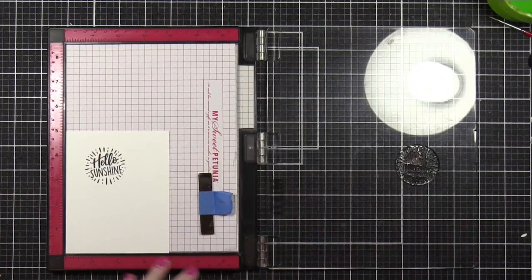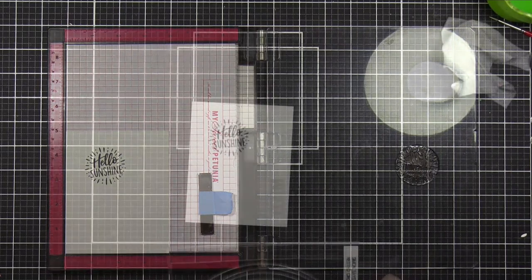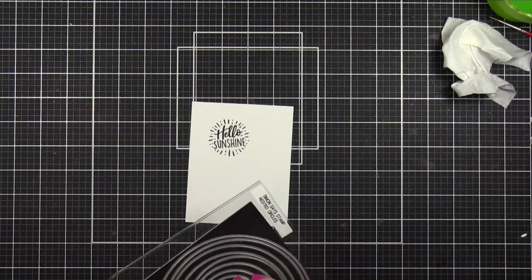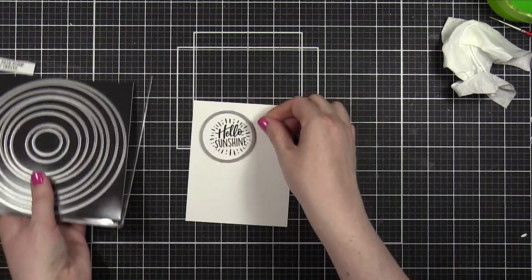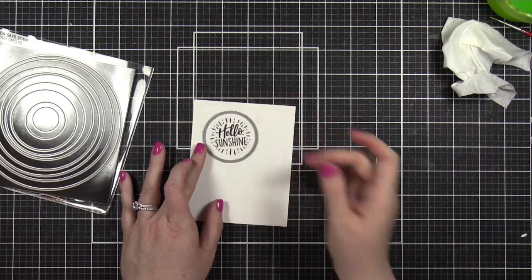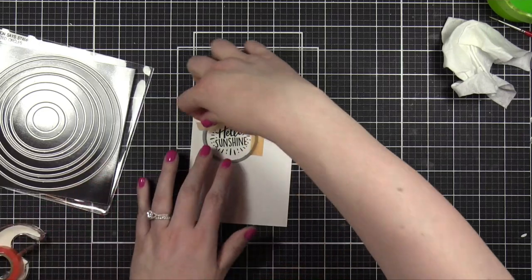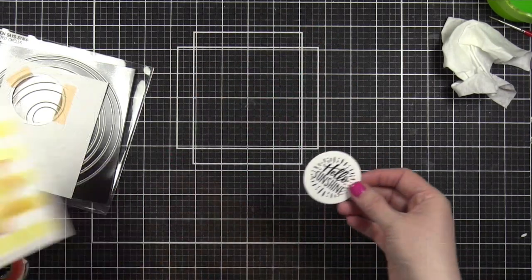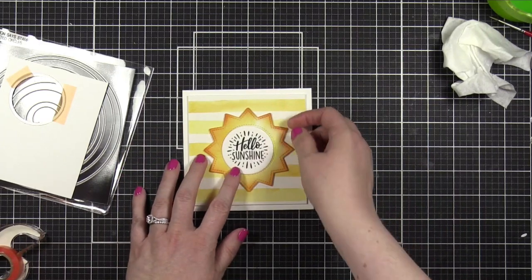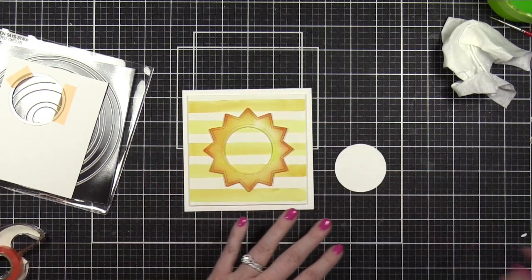And I'm going to be using a circle die to cut out this greeting here. It's the perfect size to go over that sun shape. I'm using my Simon Says Stamp Nested Circles dies. Lawn Fawn also has lots of circle dies that would work. I trimmed that out with my die cutting machine, and then I'm going to adhere it to the front of my card.